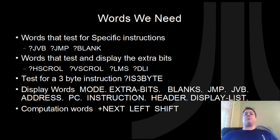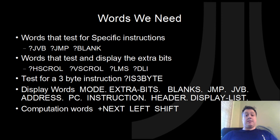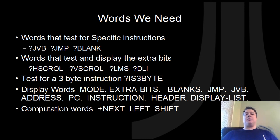Finally, we have display words for displaying the mode for a mode instruction, the extra bits, how many blanks if it's a blank instruction, the address for a jump instruction, and the address for a JVB — with a shared address word between those two. We also have a PC (program counter) word. The higher-level words include 'instruction', which takes a full three-byte instruction stream and parses and displays it; 'header', used for cosmetic purposes to label this as a display list; and 'display list', which loops through until it finds the JVB instruction at the bottom. Computation words are used by display list to figure out what the next instruction is, fetch it, and put it on the stack to pass into instruction.